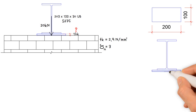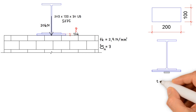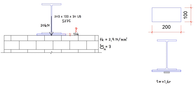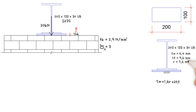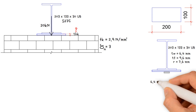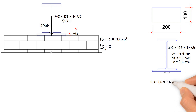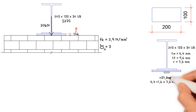First, we need to determine the stiff bearing length, which equals thickness of the web plus 1.6 times root radius, plus 2 times thickness of the flange. For the 203 x 133 x 30 UB steel section, the thickness of the web is 6.4 mm, the thickness of the flange is 9.6 mm, and the root radius is 7.6 mm. As a result, the stiff bearing length equals 6.4 + (1.6 × 7.6) + (2 × 9.6), giving a value of 37.8 mm.